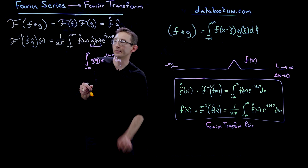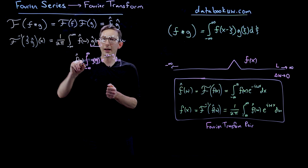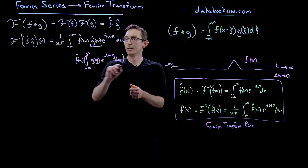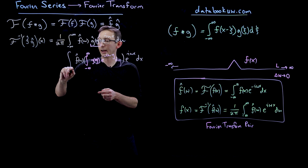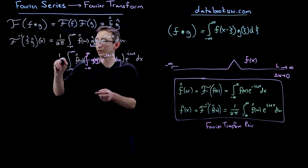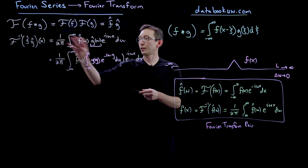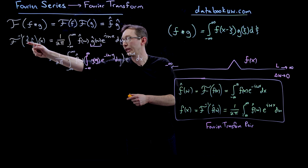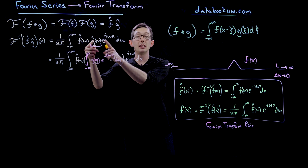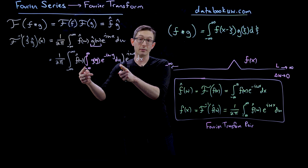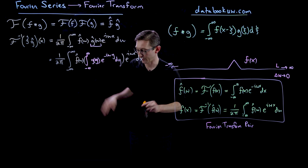And then I still have all my other terms: f-hat of omega, e to the i omega x, the d omega integral from negative infinity to infinity, and the 1 over 2π factor. So all I did was take my inverse Fourier transform of f-hat and g-hat, get this expression, and then for my g-hat omega I plugged in the Fourier transform of g as a function g of y in some dummy variable y.